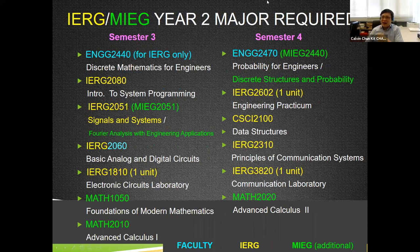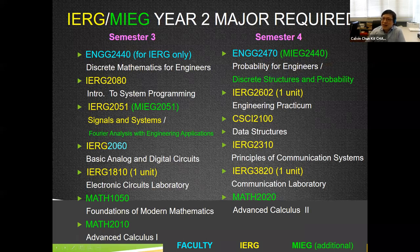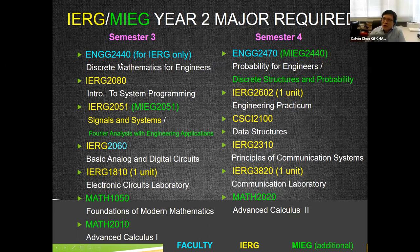Now for year two. The math requirement for IRG students is ENTG 2440, which is discrete math. For MIEG students, there's a new course MIEG 2440 in the second semester, since you should have already taken Math 1050 which covers some of the same content as discrete math. MIEG 2440 combines discrete math and probability into one course. For IRG students, the first term is still discrete math ENTG 2440, and the second term will be probability — IRG 2470, which is three units.